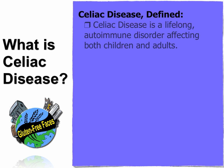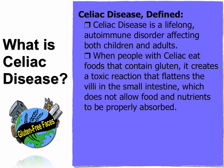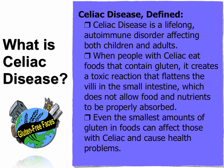So what is celiac disease? It's a lifelong autoimmune disorder affecting both children and adults. When people with celiac eat foods that contain gluten, it creates a toxic reaction that flattens the villi in the small intestine, which does not allow food and nutrients to properly be absorbed. Even the smallest amounts of gluten in foods can affect those with celiac and cause health problems.